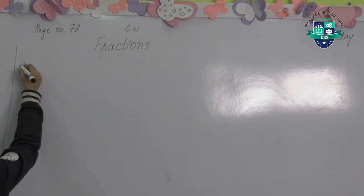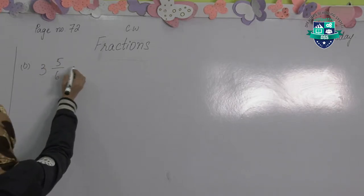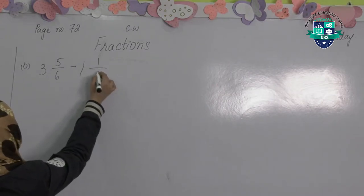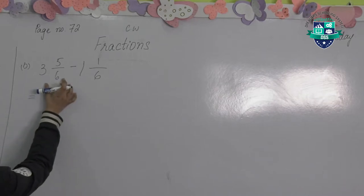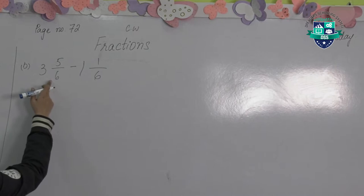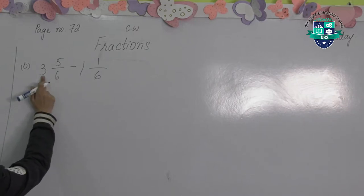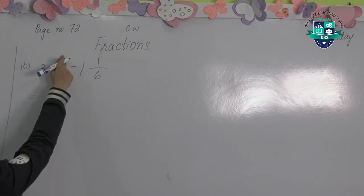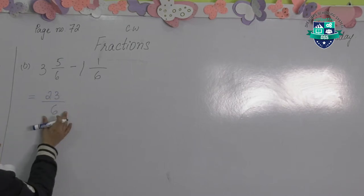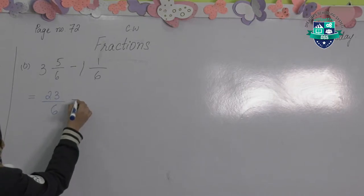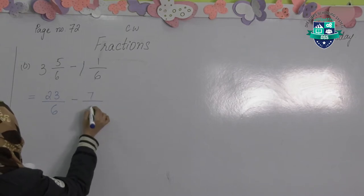The next question is 3 whole 5 by 6 minus 1 whole 1 by 6. This is also the same — you will first change the mixed numbers into improper fractions by multiplying the denominator with the whole number. 6 threes are 18, 18 plus 5, the numerator is equal to 23 by 6. Then minus: 6 ones are 6, 6 plus 1 is 7 by 6.